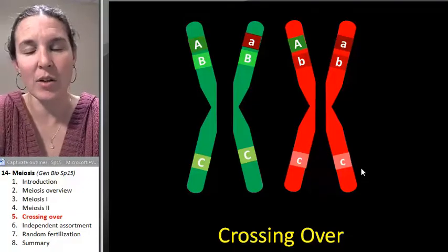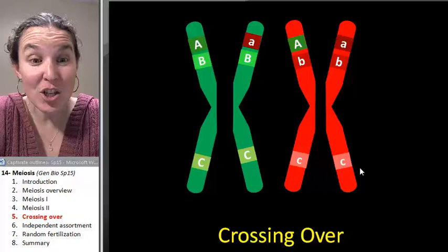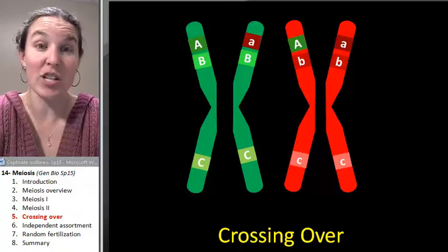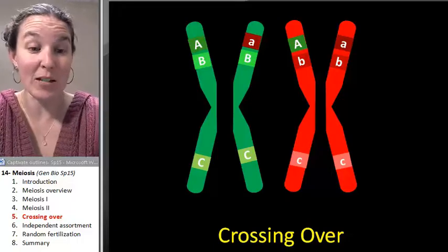That's the process of crossing over. The next thing I'm going to show you is the process of independent assortment, which also results in increased genetic diversity from the process of meiosis.